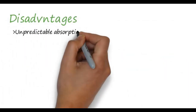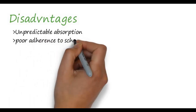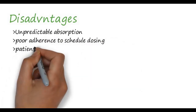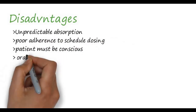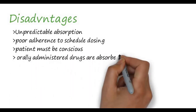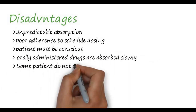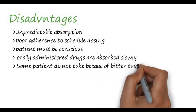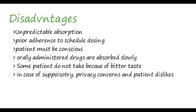The disadvantages include unpredictable absorption, poor adherence to scheduled dosing, and the patient must be conscious. Orally administered drugs are absorbed slowly, and some patients do not take them because of bitter taste. In cases of privacy concern, patients may dislike this route. Unpredictable absorption is due to acid-related factors, intestine-related factors, liver-related factors, and the first-pass effect.